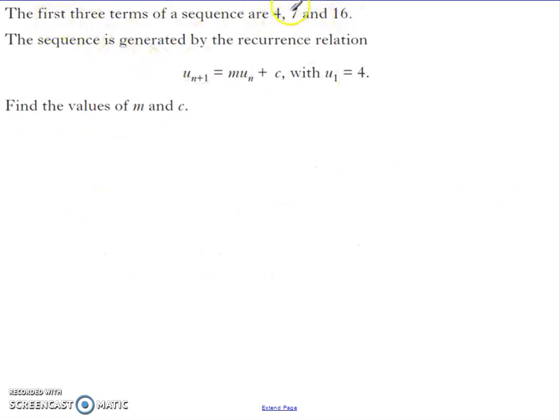Second question. The first three terms are 4, 7, and 16. The sequence is generated by the recurrence relation un+1 equals m times un plus c, with u1 equals 4. Find the values of m and c. This is the one we have to use the three terms, set up our simultaneous equations and solve them that way. We know u1, but we don't have u0. We do know u2, so u2 is 7, and u3 is 16. We know that u2 equals u1 times m plus c, and u3 equals u2 times m plus c. We're able to generate these from the terms we have.